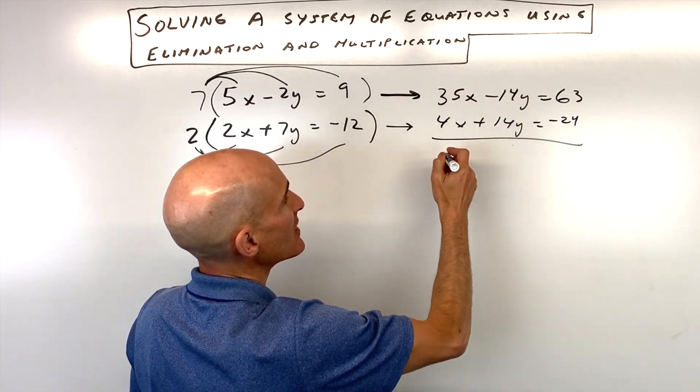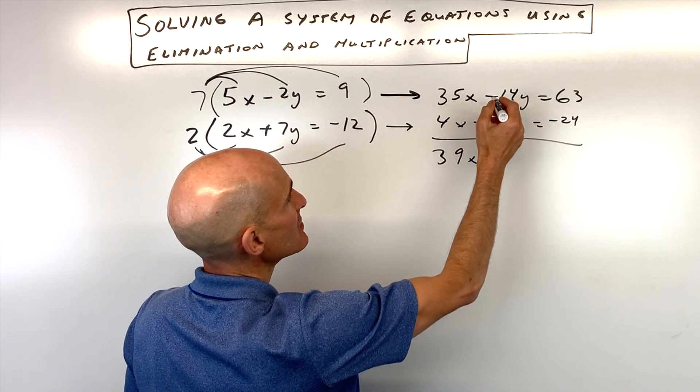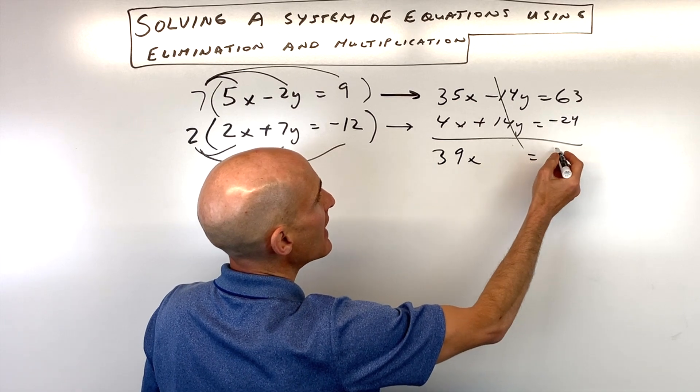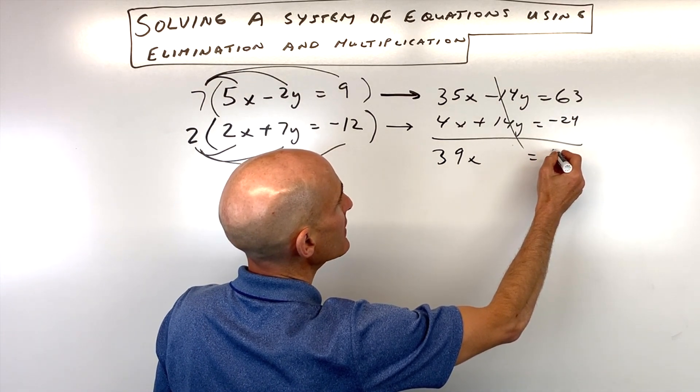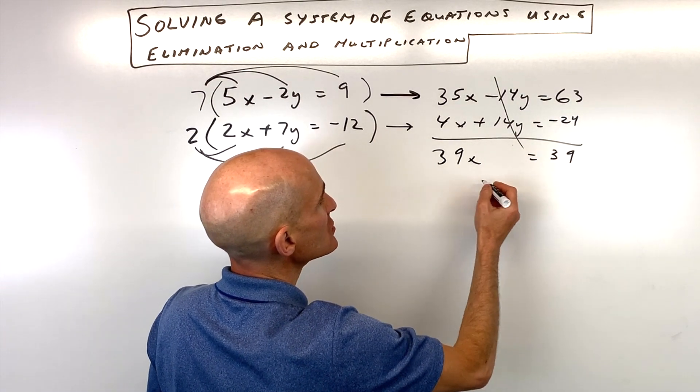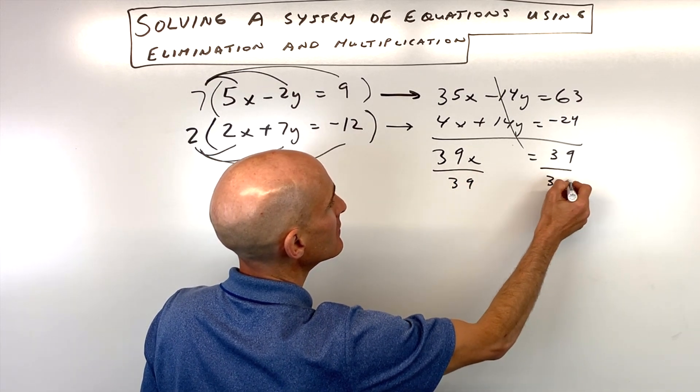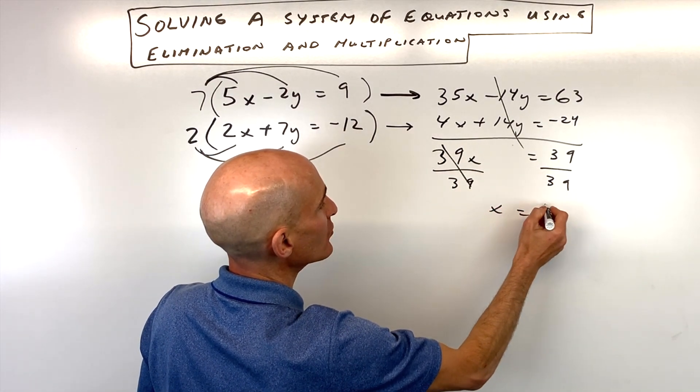So now what we're going to do is we're going to add straight down. That's going to give us 39x. The y's are actually going to cancel. And then this is equal to 39. So if we divide both sides by 39 you can see that x is equal to 1.